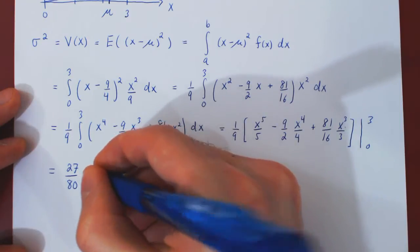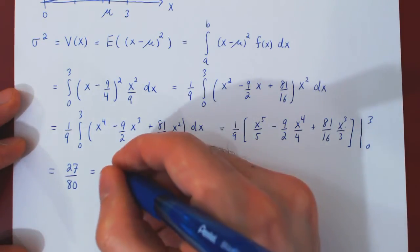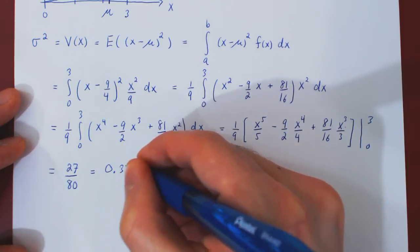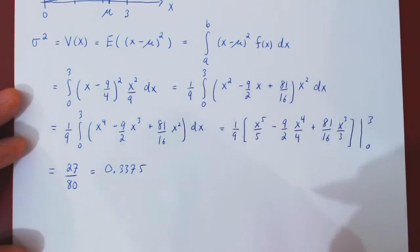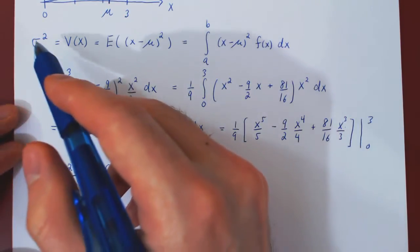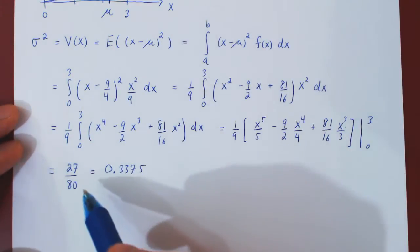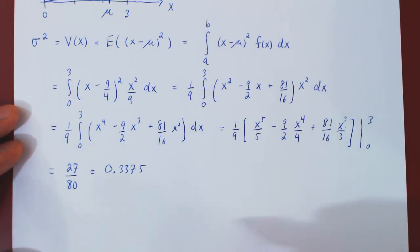If you want in decimals, this is exactly 0.3375. So, we now have the variance of the random variable x, 0.3375.